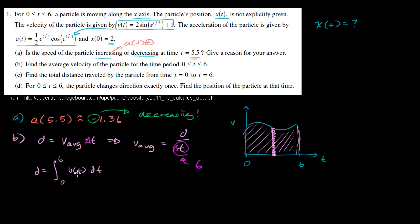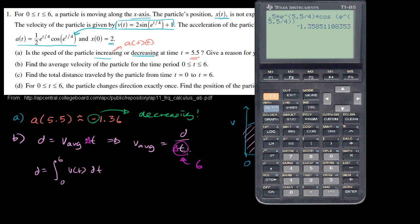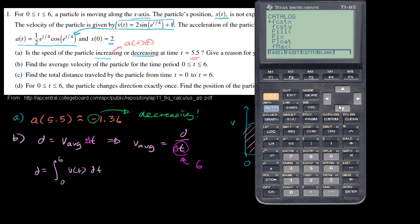Let's find the distance traveled between time 0 and time 6. We can use the TI-85. We'll go to catalog, which lists all available functions. To evaluate definite integrals, I'll go straight to the f's and go one page down. There it is — fn int. This is the definite integral function. I'll use fn int.